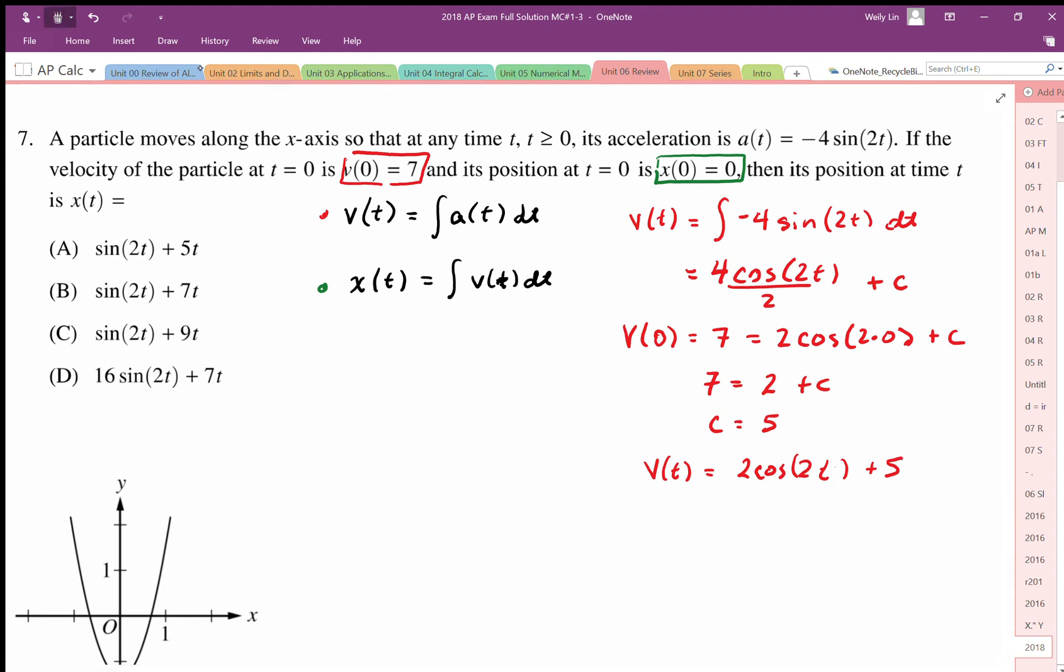Now we move on to anti-differentiate again to generate our position function x. So I'm going to say that x of t is equal to the integral of v of t, which is 2 cosine 2t plus 5 dt. So the anti-derivative of cosine is sine, so we end up with 2 sine 2t. Remember to undo that extra times 2 with the divide 2 plus 5t plus c.